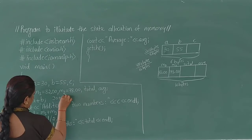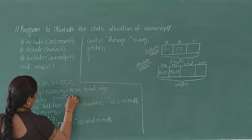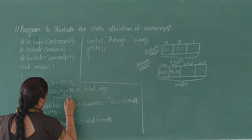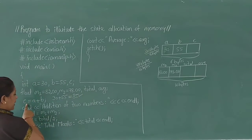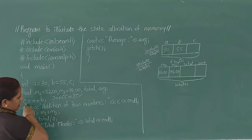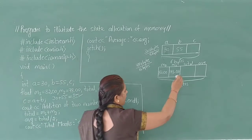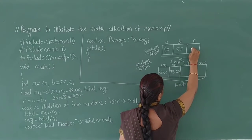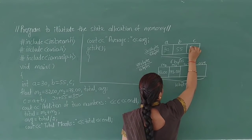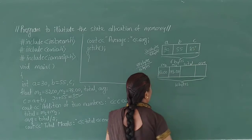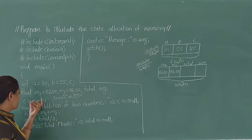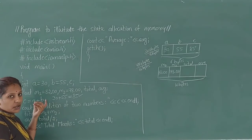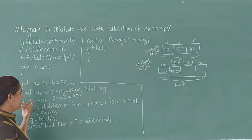30 plus 55 generates the value 85, and this value is stored in variable C. It is static allocation of memory for variable C — it stores the value 85 after adding A and B into variable C.